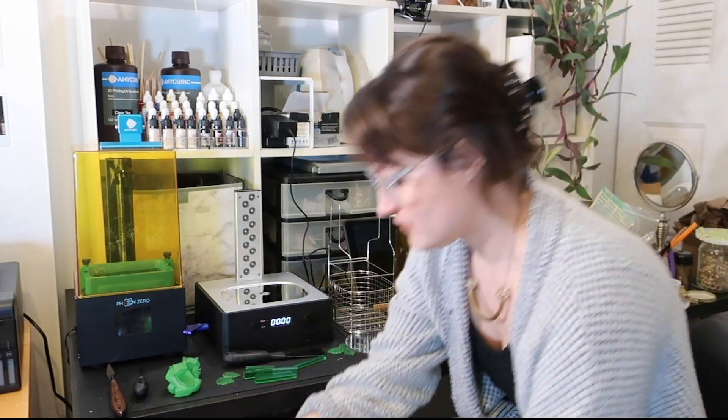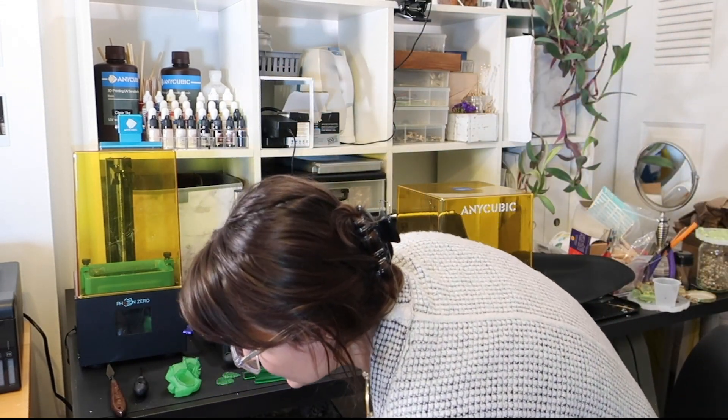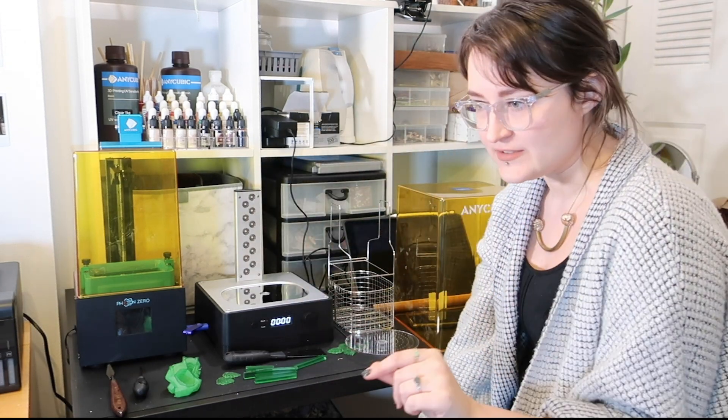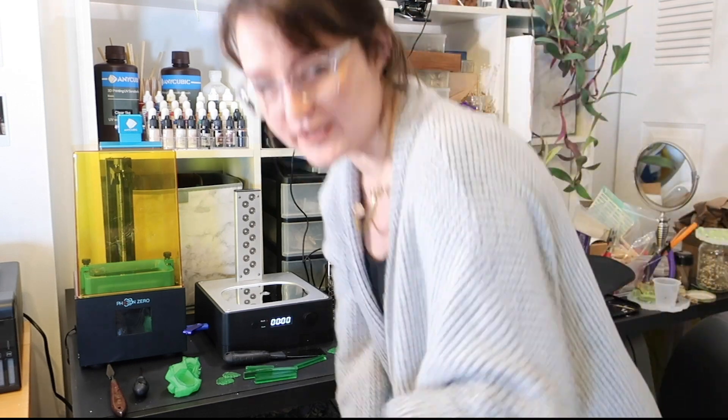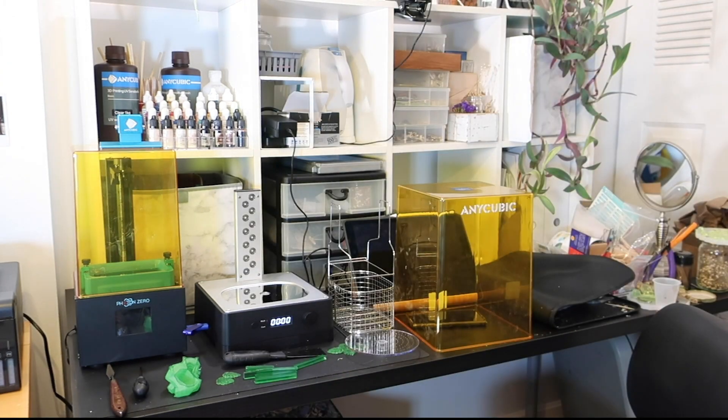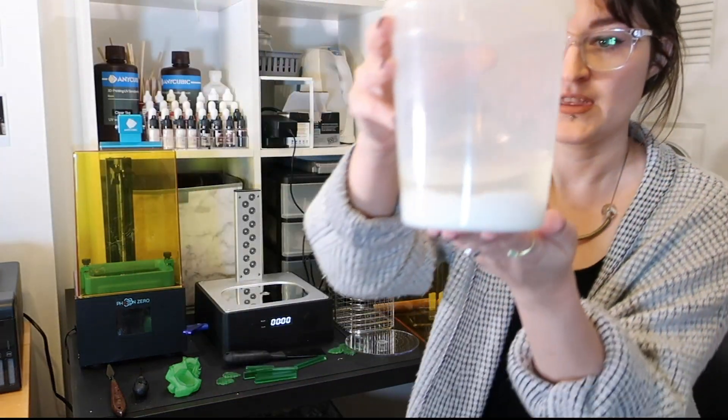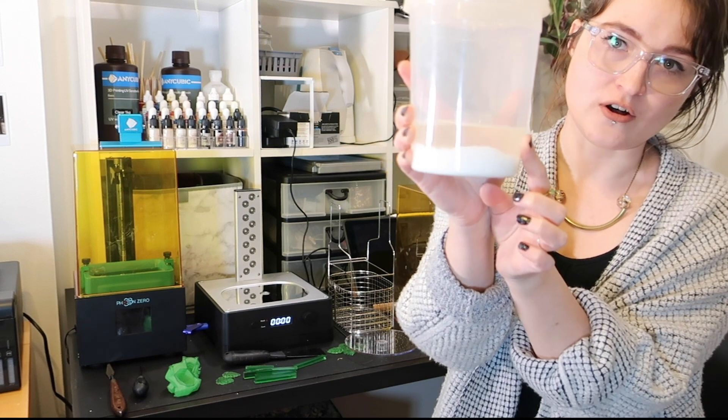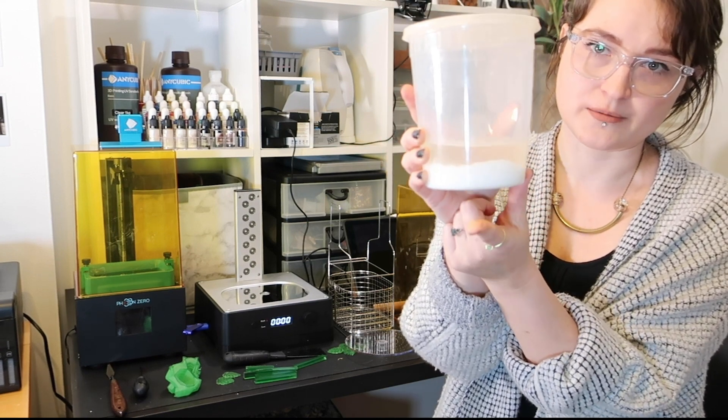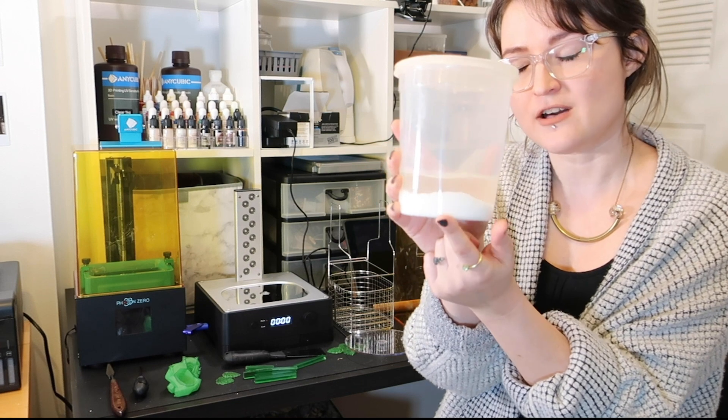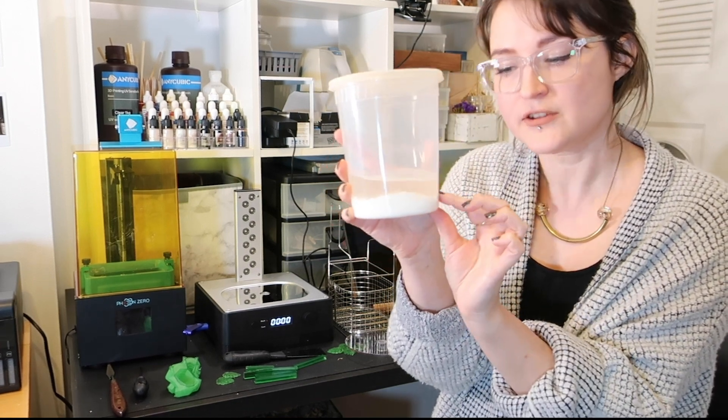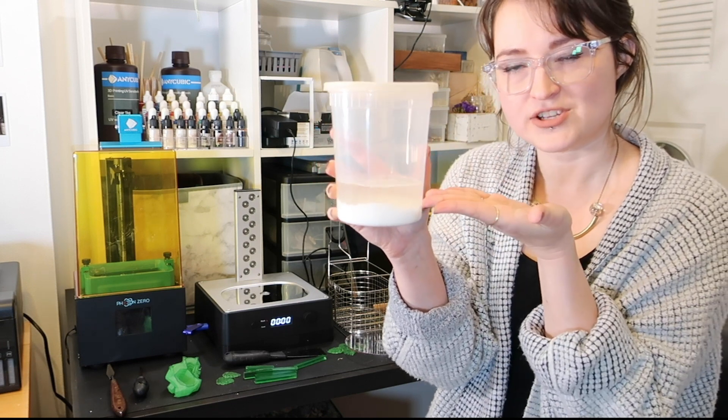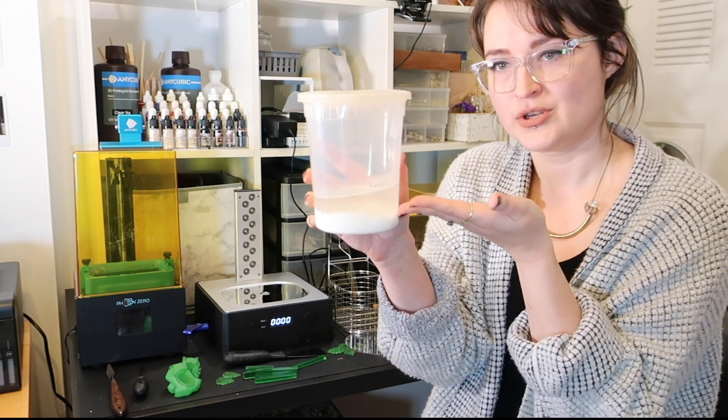So after you've done that, you put your resin away. I would recommend keeping it away from light because I will show you what light does to alcohol with uncured resin in it. Now this is what I wanted it to do. If you can see this, this is clean alcohol on top of resin that has dropped to the bottom. So what I do is I put my alcohol in the window and let the uncured resin cure to itself while it drops to the bottom, leaving you with fresh usable alcohol.